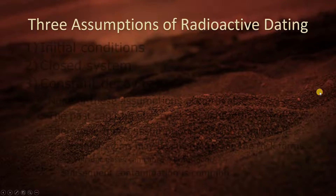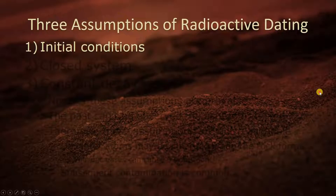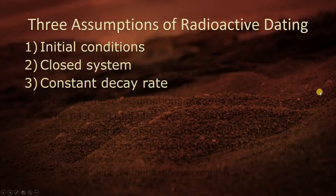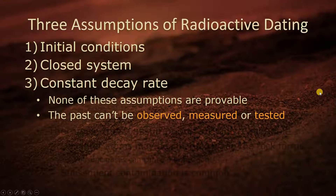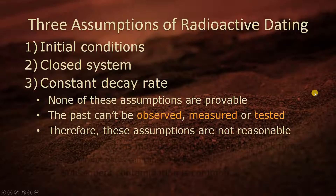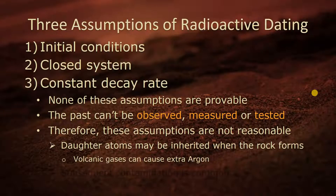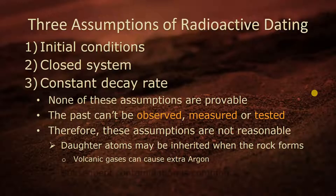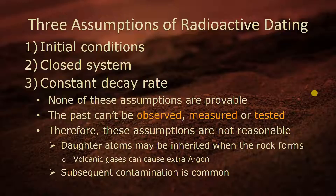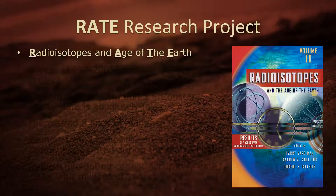The three assumptions of radioactive dating — initial conditions, a closed system, and constant decay rate — none of these assumptions are provable. The past can't be observed, measured, or tested. Therefore, these assumptions are not even reasonable. Daughter atoms may be inherited when the rock forms, like volcanic gases can cause extra argon in the potassium-argon method, and subsequent contamination is common.